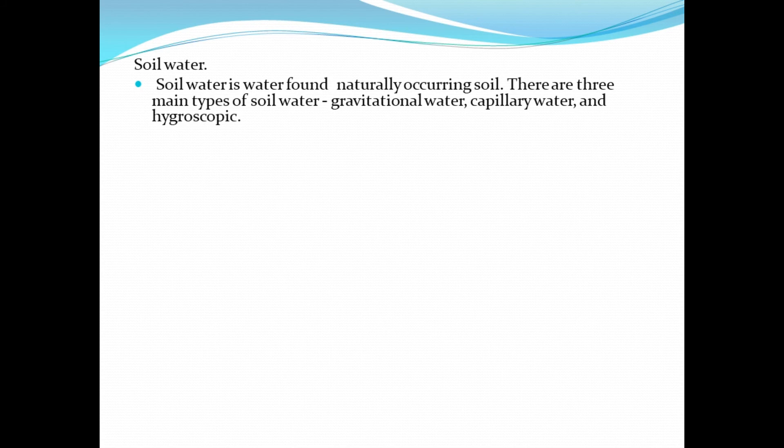Gravitational water cannot be used by plants. Capillary water is the water that can be used by plants and absorbed by plant roots. Hygroscopic moisture cannot be used by plants because it is tightly held by soil particles and is only found in dry soils.